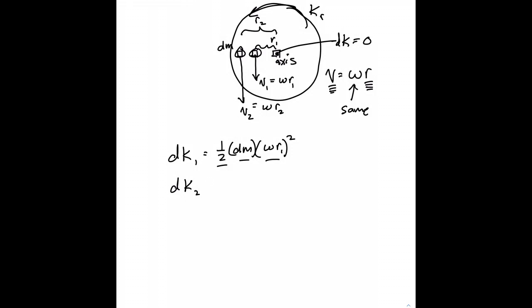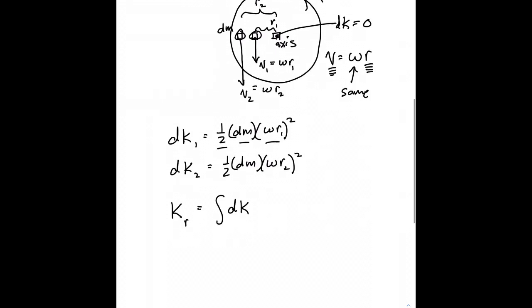So dk number one would be equal to one-half times dm times omega r number one squared. One-half times mass times speed squared. And the little bit of kinetic energy associated with the object that's farther from the center is one-half times dm times omega r number two squared.